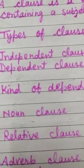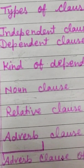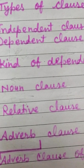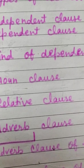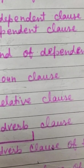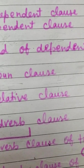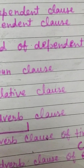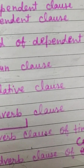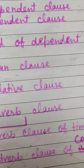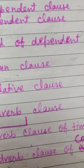A noun clause is a dependent clause that acts as a noun. It starts with words like how, that, what, whatever, when, where, whether, which, whichever, who, whoever, whom, whomever, and why. To know whether something is a noun clause, we ask the question 'what.' When we get an answer, it means it is a noun clause.